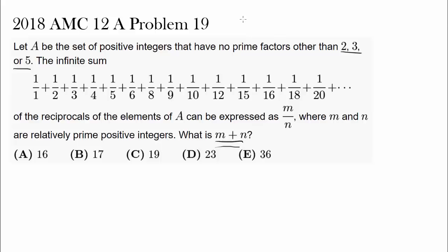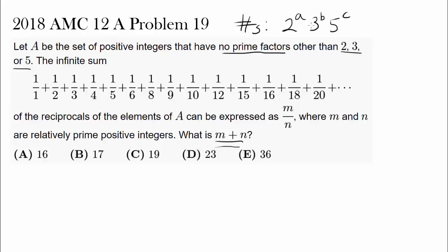We are examining numbers whose prime factorization is in the form 2 to some power, 3 to some power, 5 to some power — no other prime factors other than 2, 3, or 5. So we won't have anything like 7 squared; that's not allowed. We are looking at every single one of these numbers and taking reciprocals, then adding them all up.